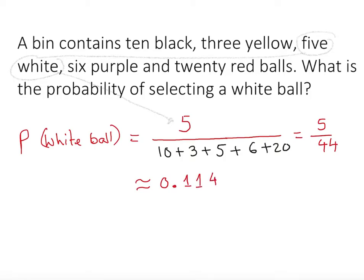So if we have 3 decimals, we know there's an 11.4% possibility that the next ball we pick up is going to be white.